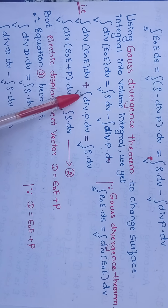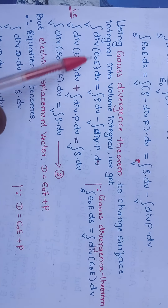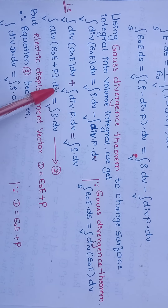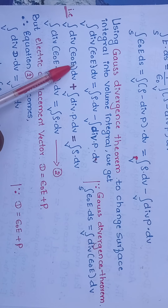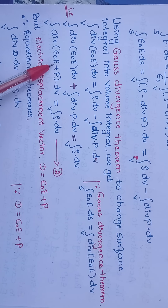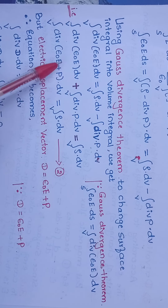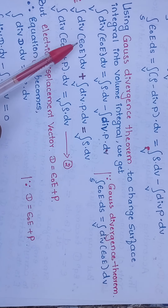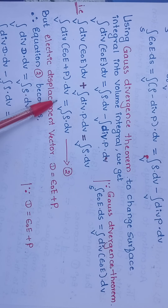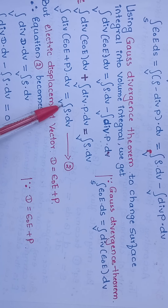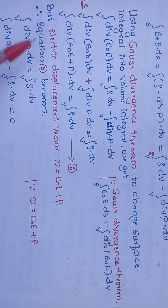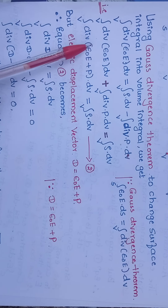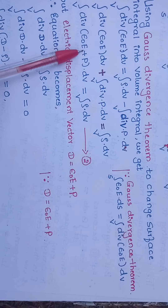In these two terms, volume integral of divergence dv is common — take it outside. The remaining terms are ε₀·E plus P. Therefore, the volume integral of divergence of (ε₀·E + P) dv equals the volume integral of ρ dv. Call that equation number 2.